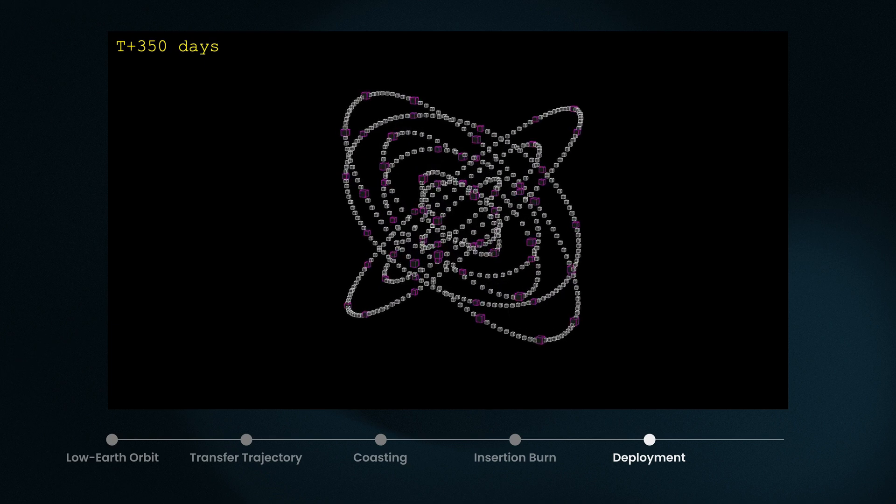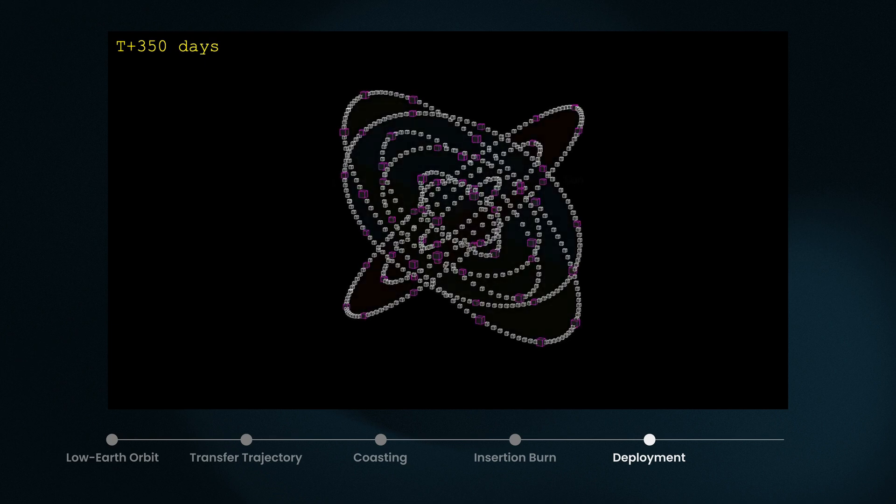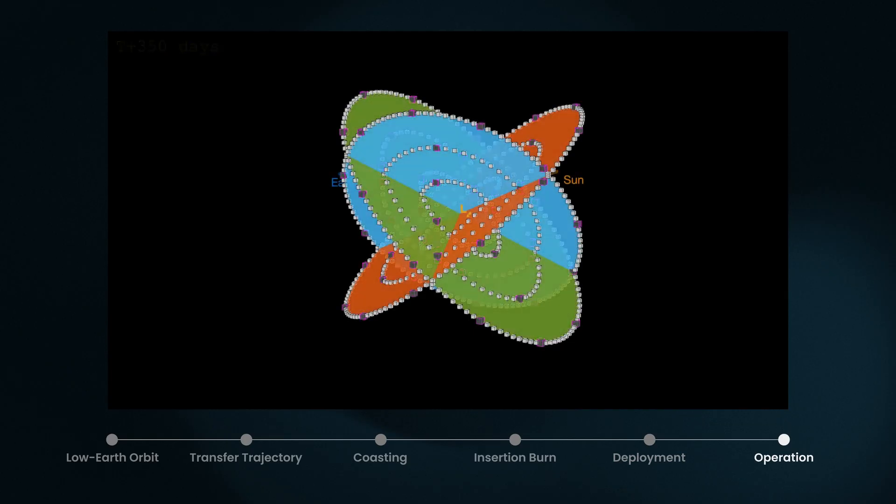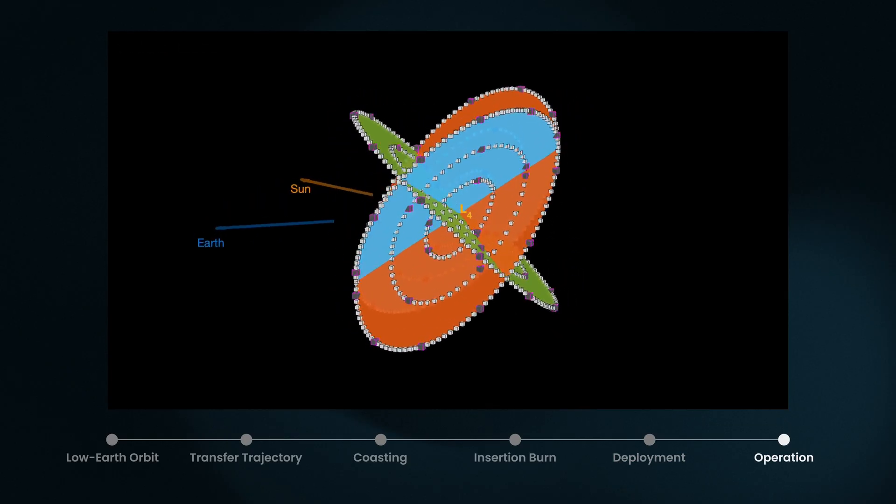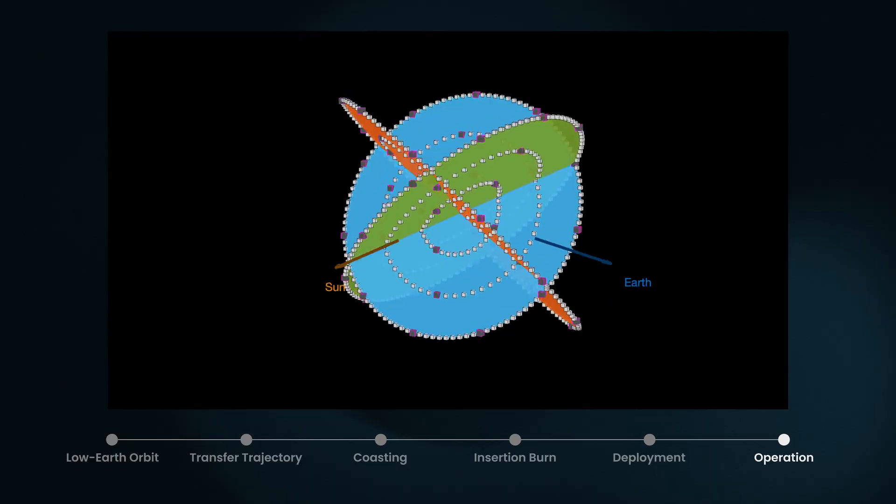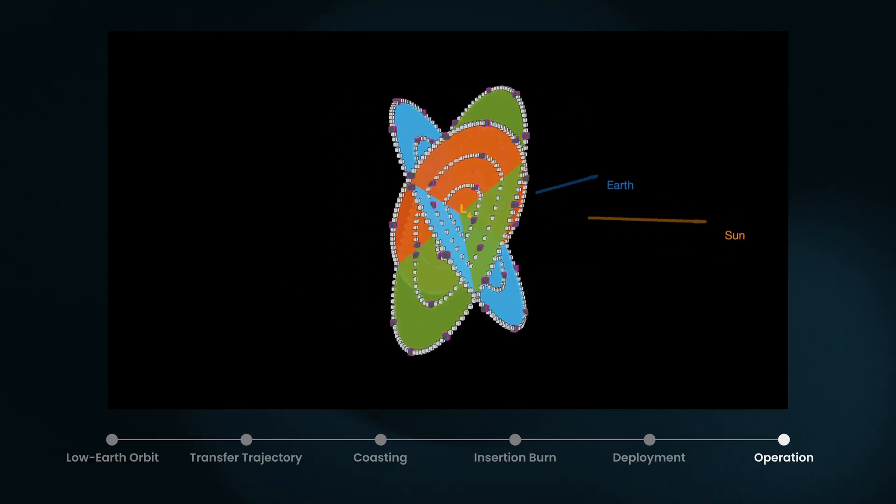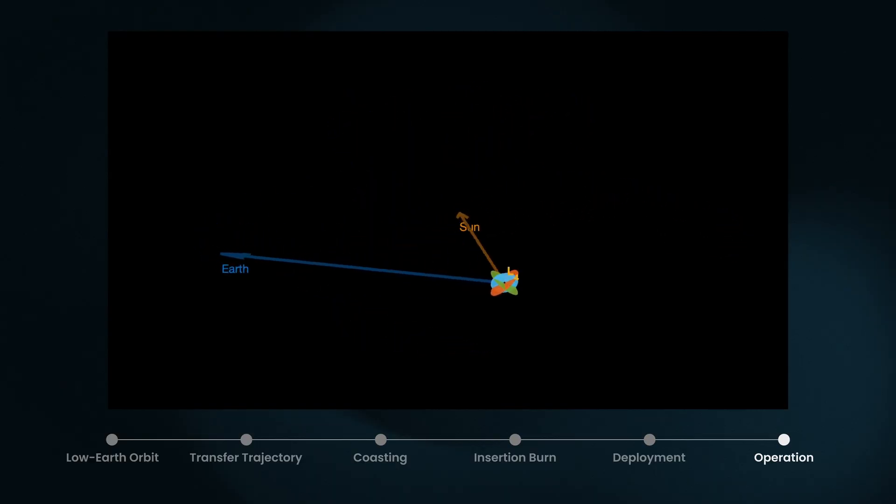The final destination is the Earth-sun L4, a gravitationally benign orbital configuration. The remote location, 93 million miles from Earth, means less radio frequency interference, which can otherwise threaten to overwhelm GOLO's sensitive measurements.